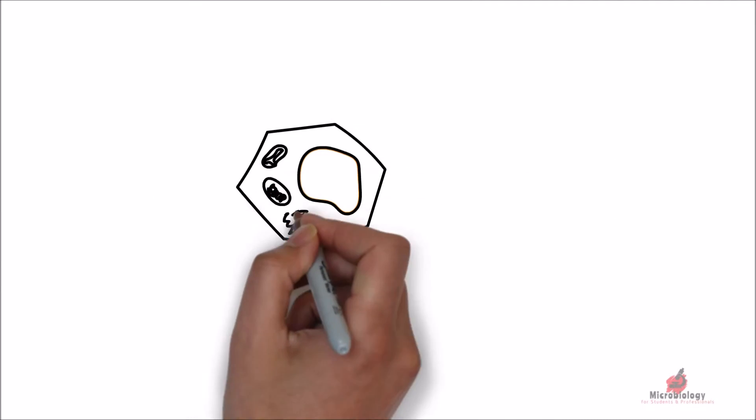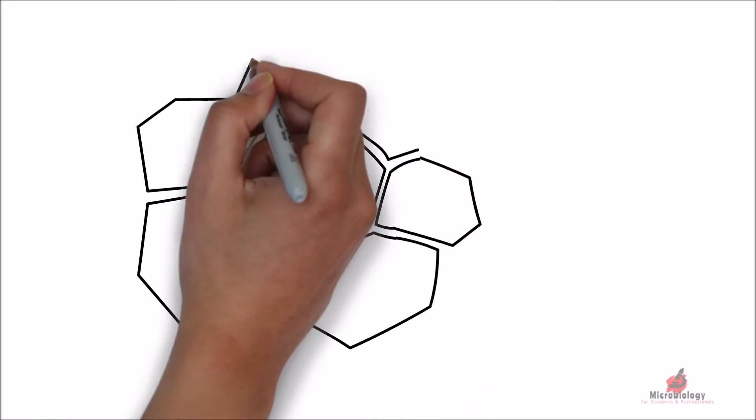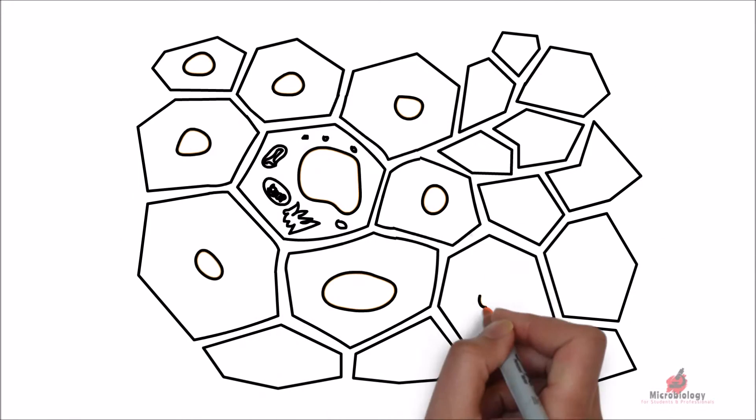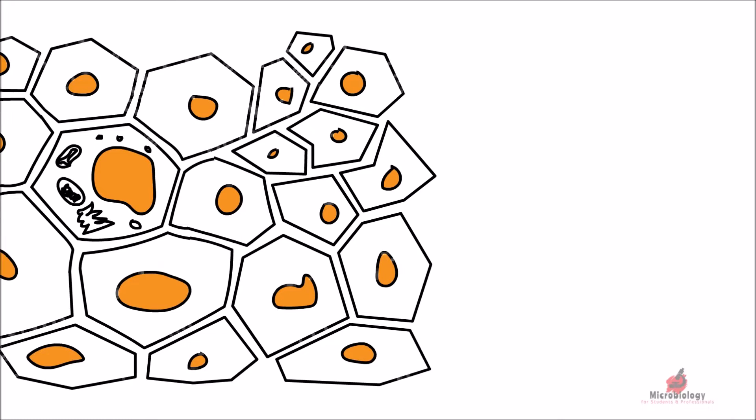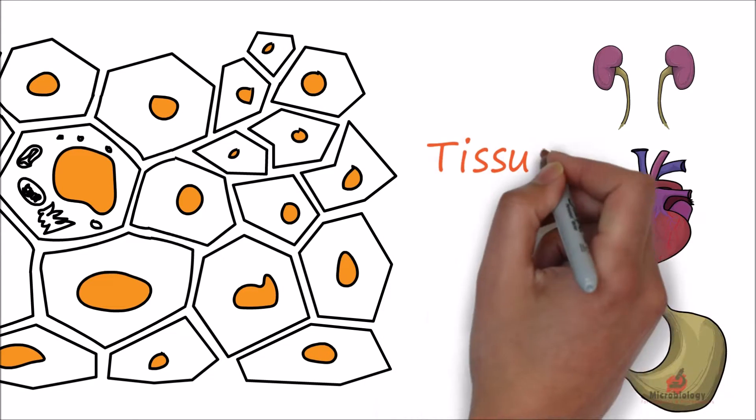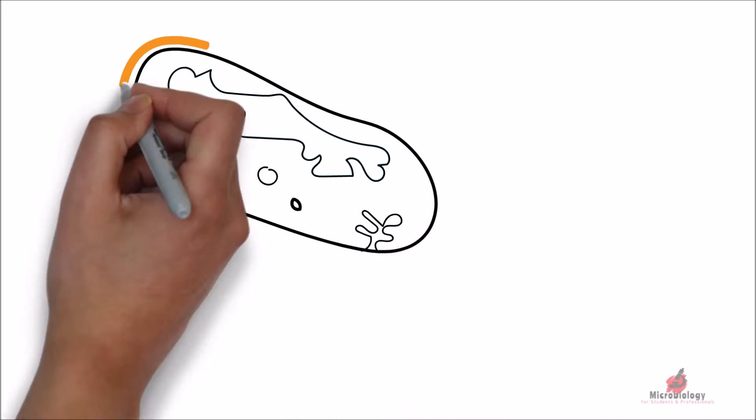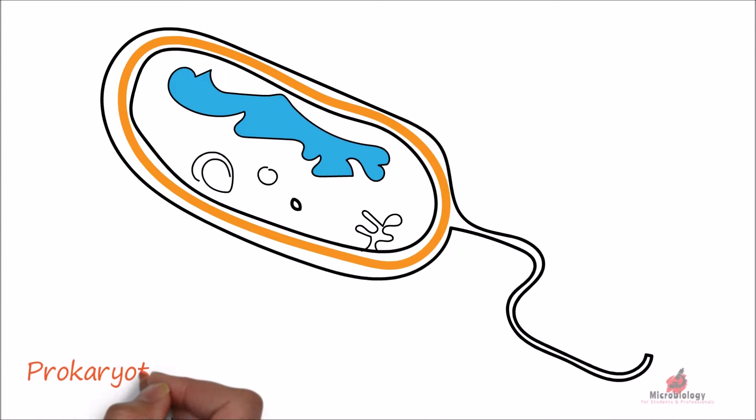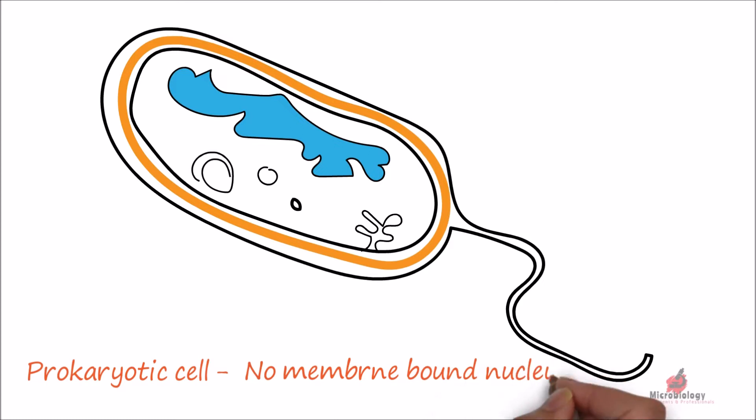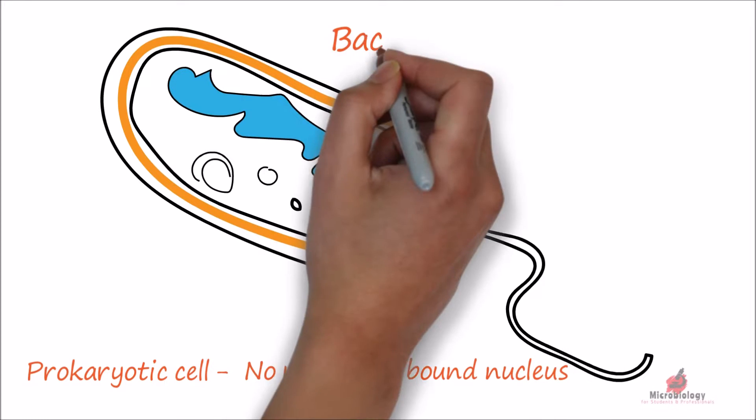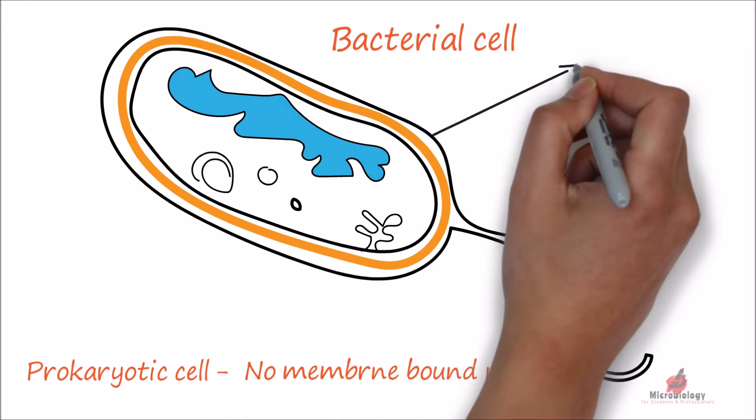Cells are the basic units of all living beings. All living organisms are made of one or more cells. Developed forms of life are multicellular, formed into tissues and organs. Bacteria is a single-celled organism and an example of prokaryotic cell, which means the nucleus is not bound by membrane.